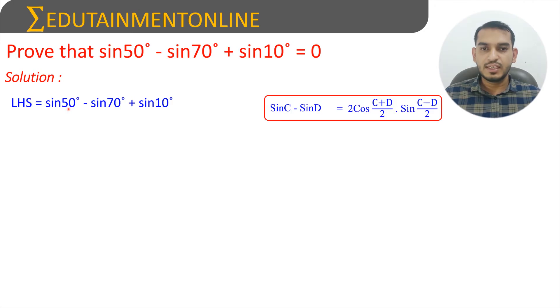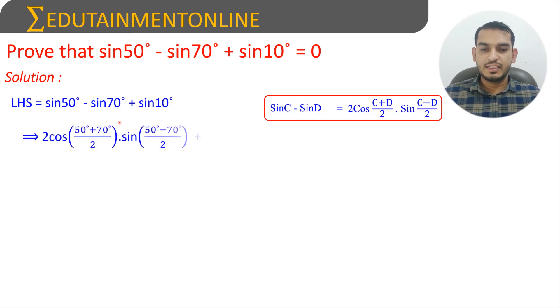Considering 50 degrees as C and 70 degrees as D, we can write this as 2 cos of (50 degrees plus 70 degrees) by 2, into sin of (50 minus 70) by 2, plus sin 10 degrees.